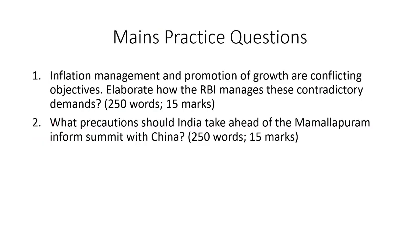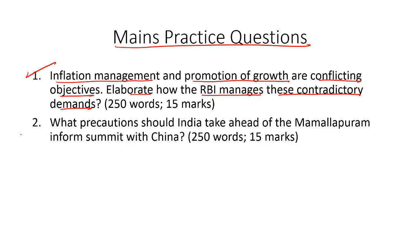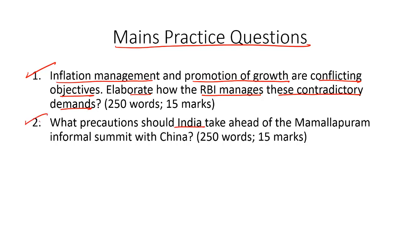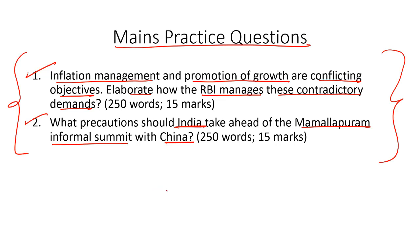Finally, let's take up a couple of mains practice questions. The first question: Inflation management and promotion of growth are conflicting objectives — elaborate how the RBI manages these contradictory demands. The second question: What precautions should India take ahead of the Mamallapuram informal summit with China? Kindly write an answer to these questions and post them in the comment section below. This concludes our discussion for the day. Thanks for watching.